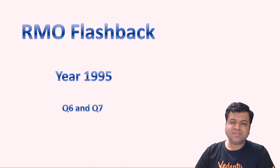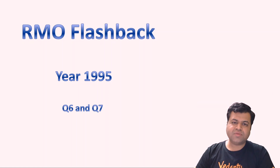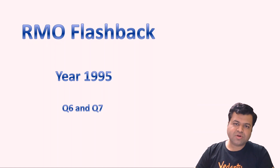In this series we are discussing previous year questions of RMO. In today's lecture we will be discussing question number 6 and question number 7 of year 1995. Both of these are good questions — one is from permutation and combination and the other is a mixture of inequalities, trigonometry and some algebra.